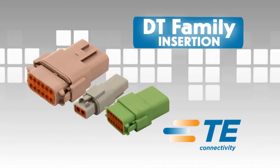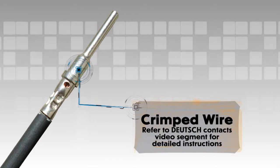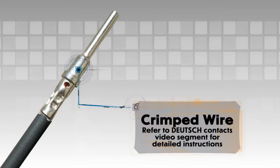DT contact insertion. Begin with a crimped wire. For assistance, refer to the Deutsch Contacts video segment for detailed instructions.